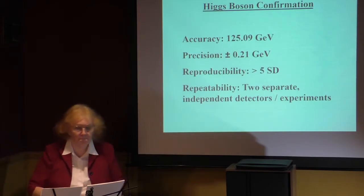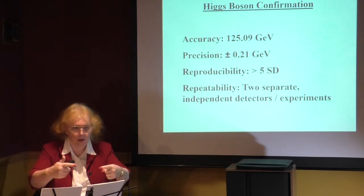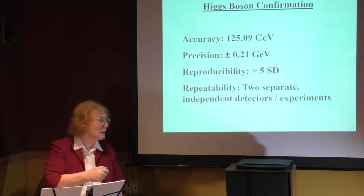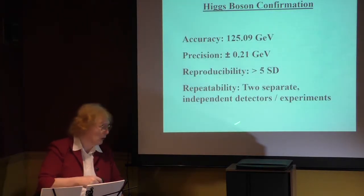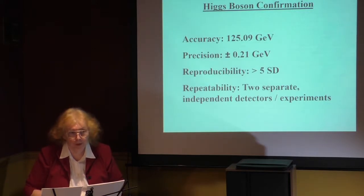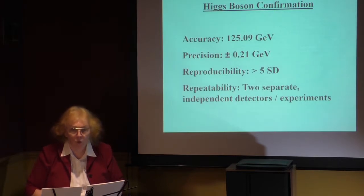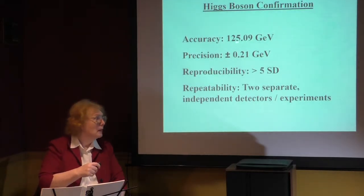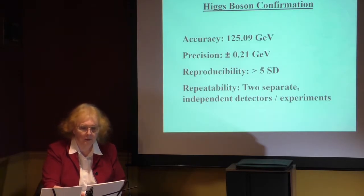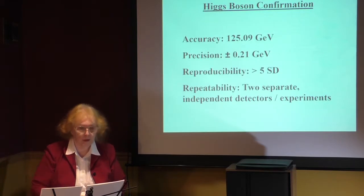Also look at the repeatability: two separate experiments — CMS and ATLAS — looking at exactly the same phenomenon, coming in at exactly the same sets of numbers. This precision is for the combination of the two detectors. Two separate experiments arriving at this number. We get a good shot at it; this is a solid number. Whatever it is — and we're going to name it the Higgs boson — that's where it is. And it turns out it fulfills all the other requirements of that particular boson.